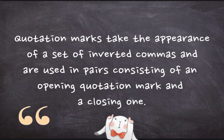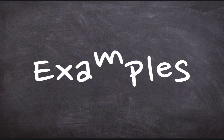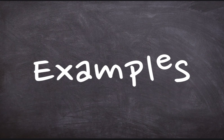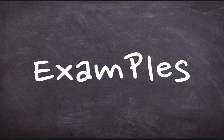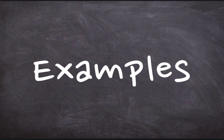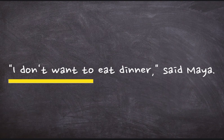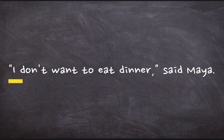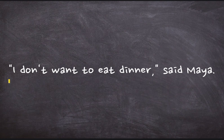Quotation marks take the appearance of a set of inverted commas and are used in pairs, consisting of an opening quotation mark and a closing one. Let's see some examples and try to understand how quotation marks are used. The first one is: "I don't want to eat dinner," said Maya — quotation marks used here to show speech or writing by a character.